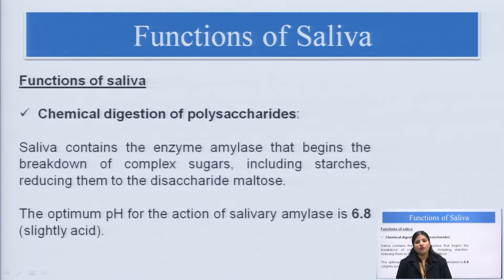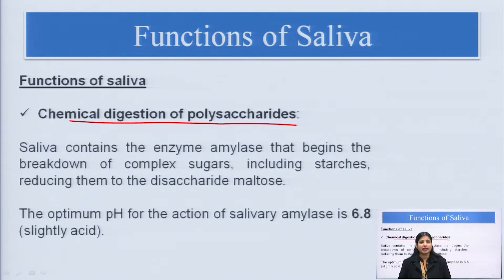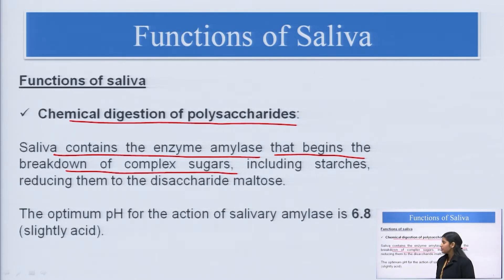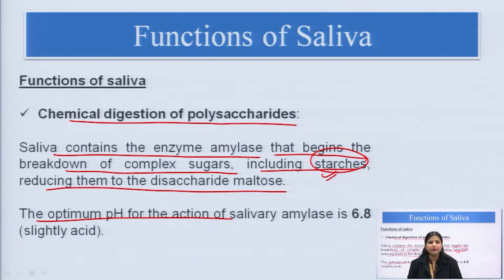Coming to the functions of saliva: the most important is the chemical digestion of polysaccharides. Complex polysaccharides, such as starch, are converted into disaccharides and monosaccharides with the help of salivary amylase present in the saliva. The saliva contains the enzyme amylase that begins the breakdown of complex sugars. For example, starch is reduced into disaccharide maltose and sucrose. The optimum pH for salivary amylase action is nearly 6.8, which is slightly acidic.